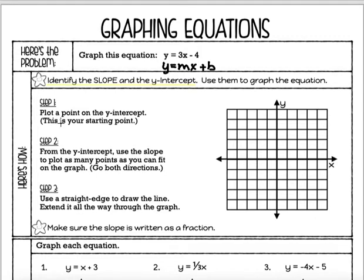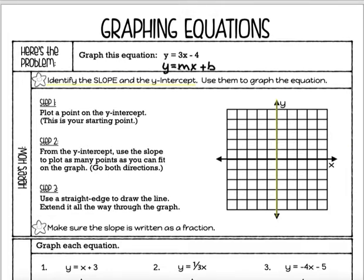Step one: we're going to plot a point on the y-intercept. I think it's a good idea to highlight your y-axis just so we can see exactly where it is that we are putting this first point. Not all graphs are perfect coordinate planes — sometimes the y-axis is a little over to the side or they're only giving you one quadrant. So it really is good to highlight it in the beginning until you get used to doing this. Looking at this equation, I know that b is the y-intercept, so the y-intercept is negative 4.